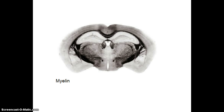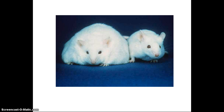If you use a stain that's primarily for myelin, you're going to see some similar structures, but they're going to be stained in a different pattern because different cell bodies are being highlighted by the different stains.